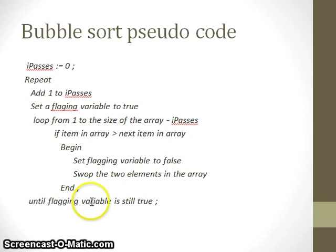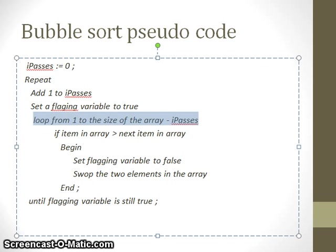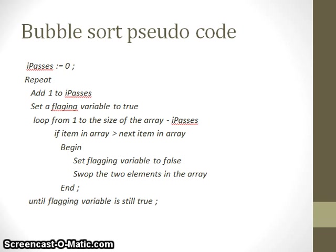I repeat doing this until the flagging variable is true. Until I can get through the entire array without making any swaps. Now, passes means how many times have I gone through the array. I don't actually need to use this ipasses variable. But when we do a loop, we're going to loop through the array from 1 to the size of the array. That will work. But because I'm minusing ipasses, what that means is I'm taking the last element of the array, or the one that I've just sorted, and not including it when I go through the loop again. So, it will work if you don't use ipasses. It just won't work as efficiently.